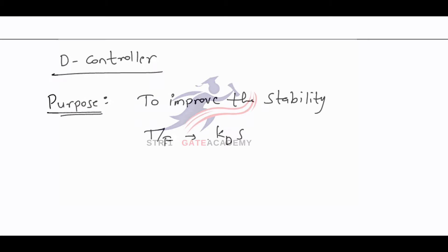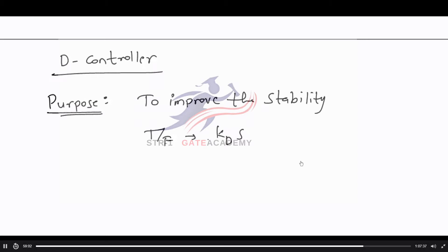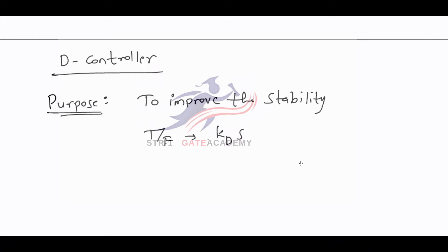Since we are reducing the type, reducing the type will increase the steady state error because for higher type systems the steady state error is less. What we are doing here is we are introducing a zero at origin, and the introduction of that zero is making the system stable but also it is reducing the type of the system.